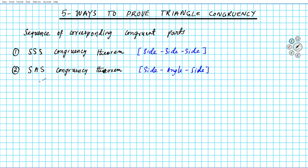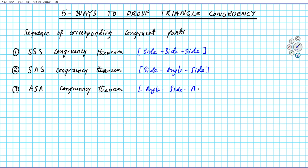The next one is the ASA congruency theorem — angle side angle in that order. If you have two pairs of triangles and the corresponding angle, side, and angle are congruent in that order, you can conclude that the two triangles are congruent. ASA simply means angle side angle.